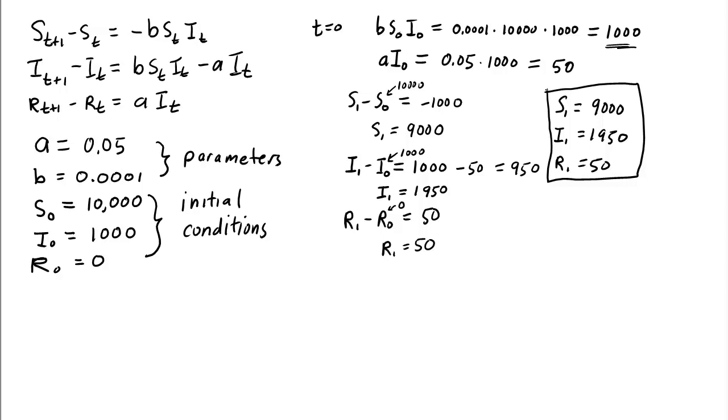So we do it for one more time step. Well, let's put in T equals 1, calculate the number of new folks that get infected. Well, that's B times S1 times I1,